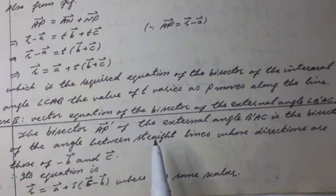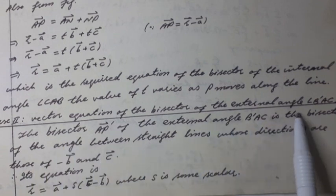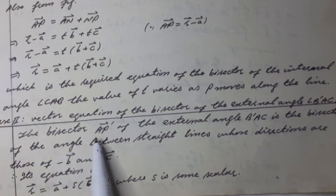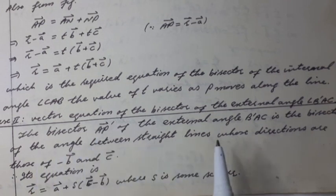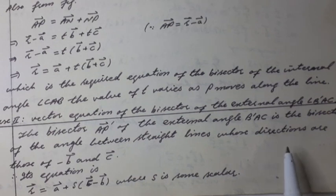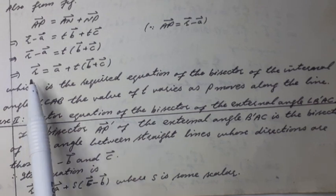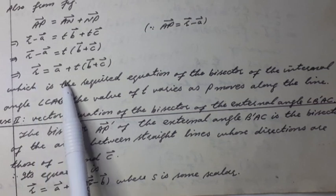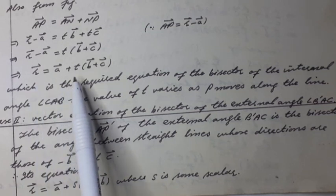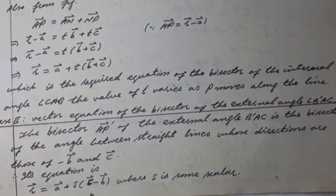Case 2: Vector equation of the bisector of the external angle B'AC, as shown in figure. The bisector AP' of the external angle B'AC is the bisector of the angle between the straight lines. Therefore its equation is R vector equals A vector plus S times (C-hat vector minus B-hat vector), where S is some scalar.